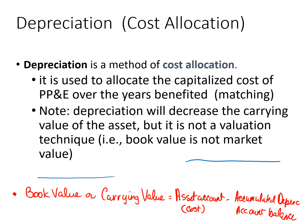Depreciation is a method of cost allocation. It is used to allocate the cost of property, plant and equipment over the years that it benefits. In other words, it stems from the matching principle of trying to match the costs associated with the revenues it generates.